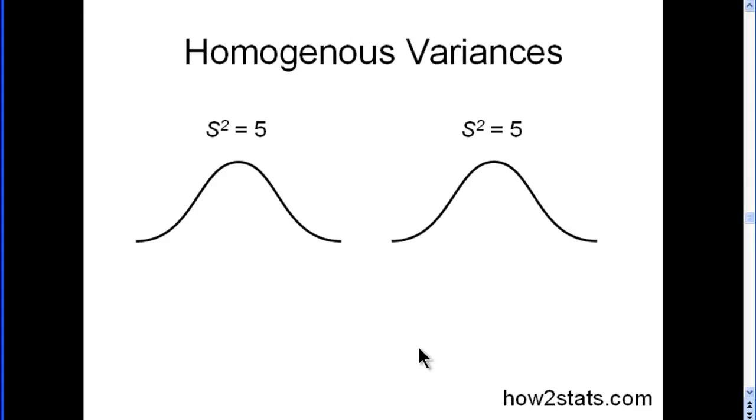Here's what homogeneous variances look like in pictorial form by just looking at the distribution. So this is the level of spread that you can see in this distribution, which has a variance of 5, and this distribution has a variance of 5.